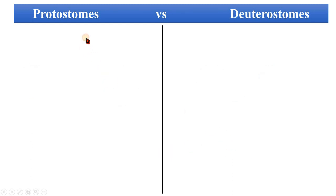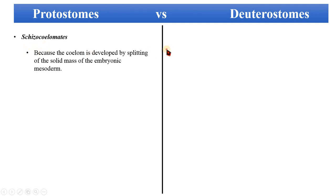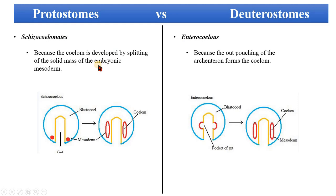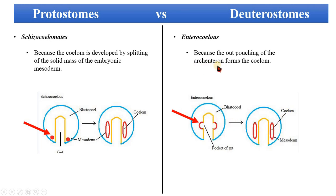Protostomes have schizocoelous development, whereas deuterostomes have enterocoelous development. In schizocoelous development, the coelom is developed by the splitting of the embryonic mesoderm — you can see here the mesoderm splitting to form the coelom. In enterocoelous development, outpouching of the archenteron occurs, and from that outpouching the coelom is formed.